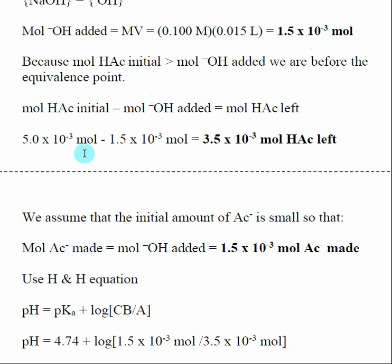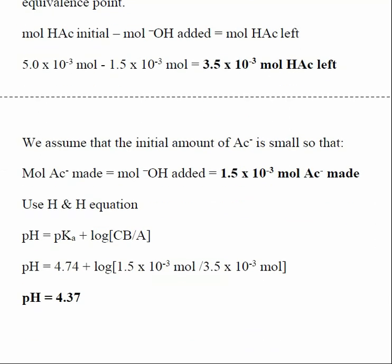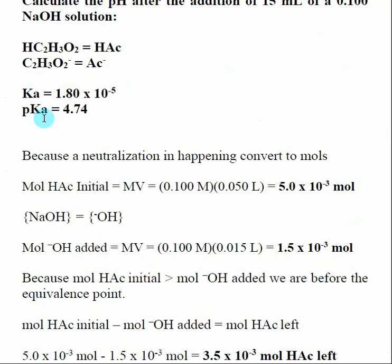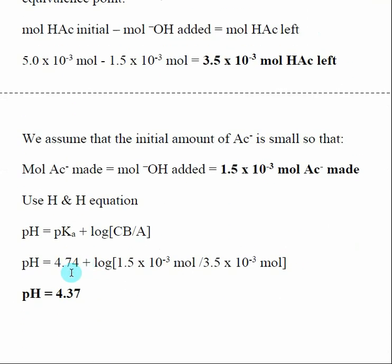We have converted 1.5×10⁻³ moles of weak acid into conjugate base. With the moles of weak acid remaining and the moles of conjugate base made, we plug these into the Henderson-Hasselbalch equation: pH = pKa + log([conjugate base]/[acid]). The pKa was given in the original question as the negative log of Ka. Importantly, in the Henderson-Hasselbalch equation, the ratio can use moles directly rather than converting to molarity, since one is divided by the other.